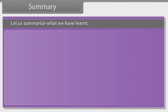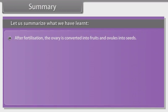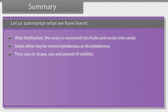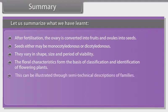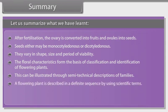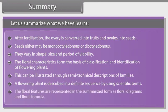Summary: after fertilization, the ovary is converted into fruits and ovules into seeds. Seeds may either be monocotyledonous or dicotyledonous, with variant shape, size, and period of viability. The floral characteristics form the basis of classification and identification of flowering plants. This can be illustrated through semi-technical descriptions of families. A flowering plant is described in a definite sequence using scientific terms. The floral features are represented in summarized form as floral diagrams and floral formulae.